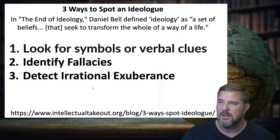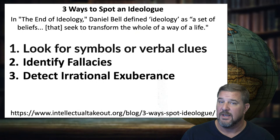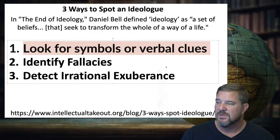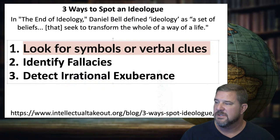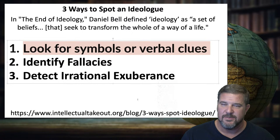Another article, Three Ways to Spot an Ideologue, references Daniel Bell's book The End of Ideology. To spot them, look for symbols or verbal clues: appeals and slogans, refusing to discuss one's terms because a point is 'obvious,' insisting on euphemisms rather than plain speech, and relying on very specialized vocabulary. Calvinists have specialized vocabulary unique to their domain — for example, 'grace' doesn't mean what grace means to the rest of Christianity.